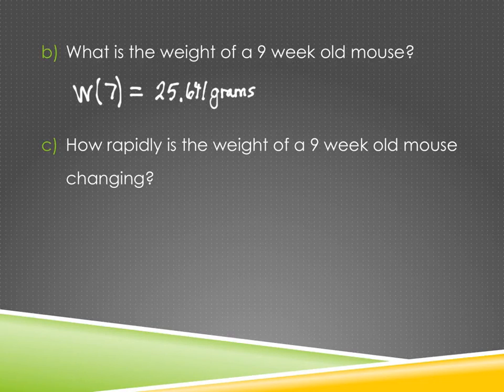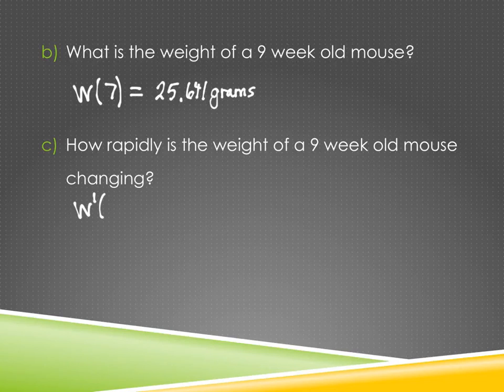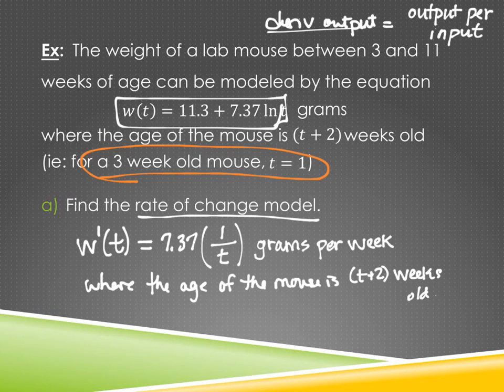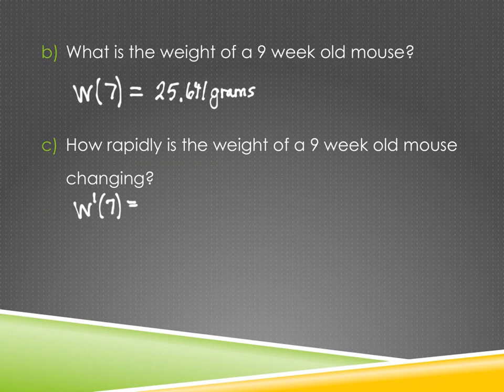All right. How rapidly is the weight changing? What is this problem asking me to do? Use the derivative model, or the rate of change model. So it's asking me to define W prime of still seven, because it was a nine-week-old mouse. That part doesn't change. So looking back at this particular model we created on part A, we need to take 7.37 and either multiply it by one over seven, or simply divide by seven, right? So what do we get when we take 7.37, divide by seven? With three decimals.